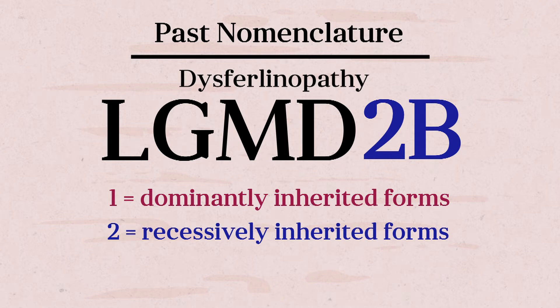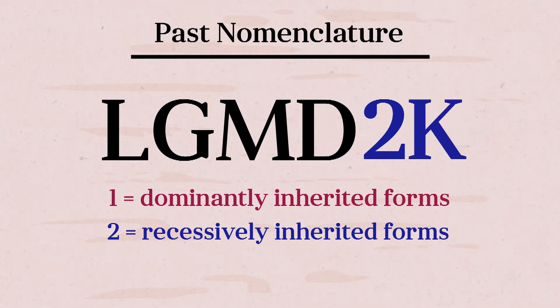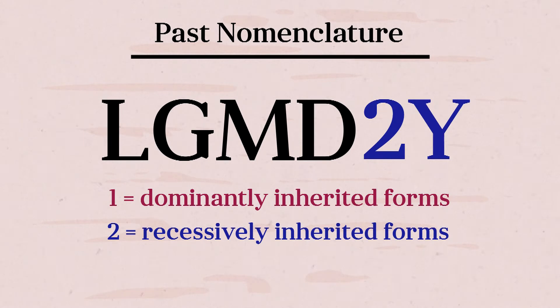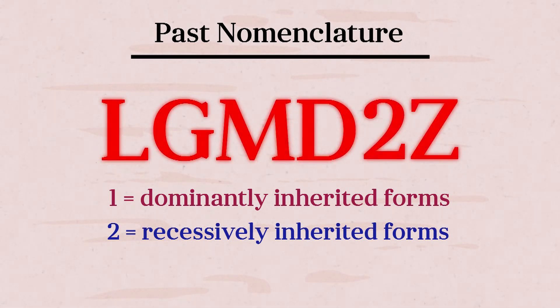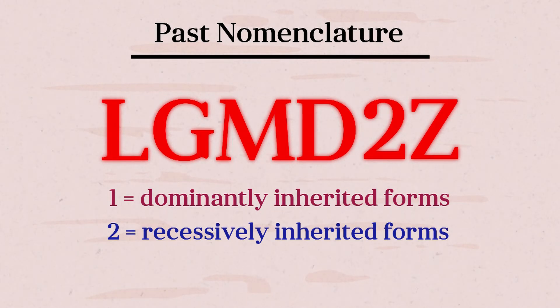The problem with this nomenclature is that at some point around 2018, we ran out of letters. LGMD2Z was identified, and then we discovered yet another LGMD. Therefore, a new nomenclature was proposed and is now taking hold.